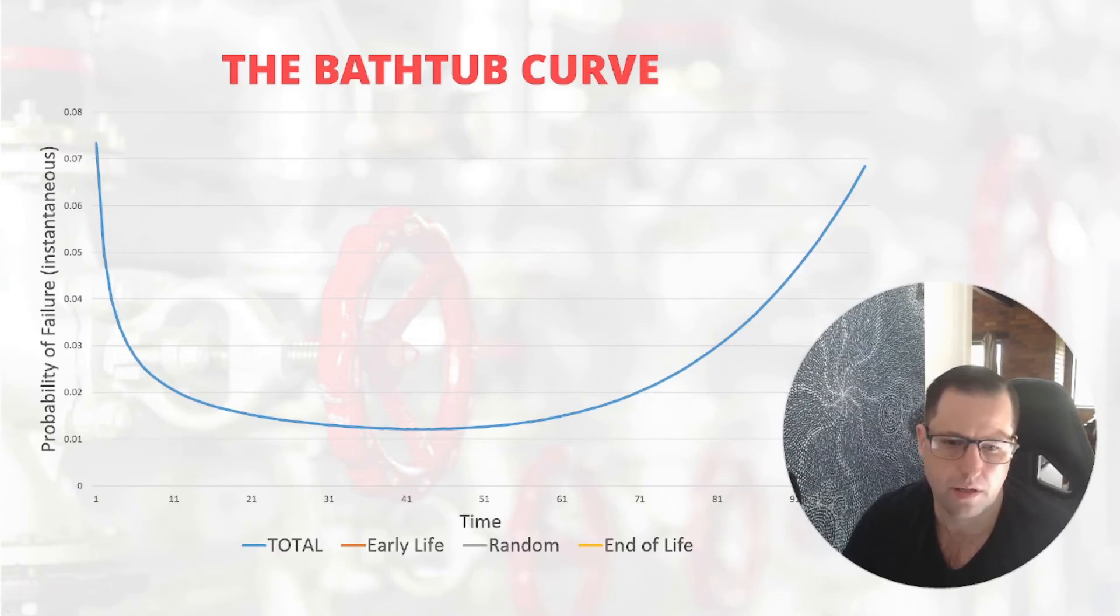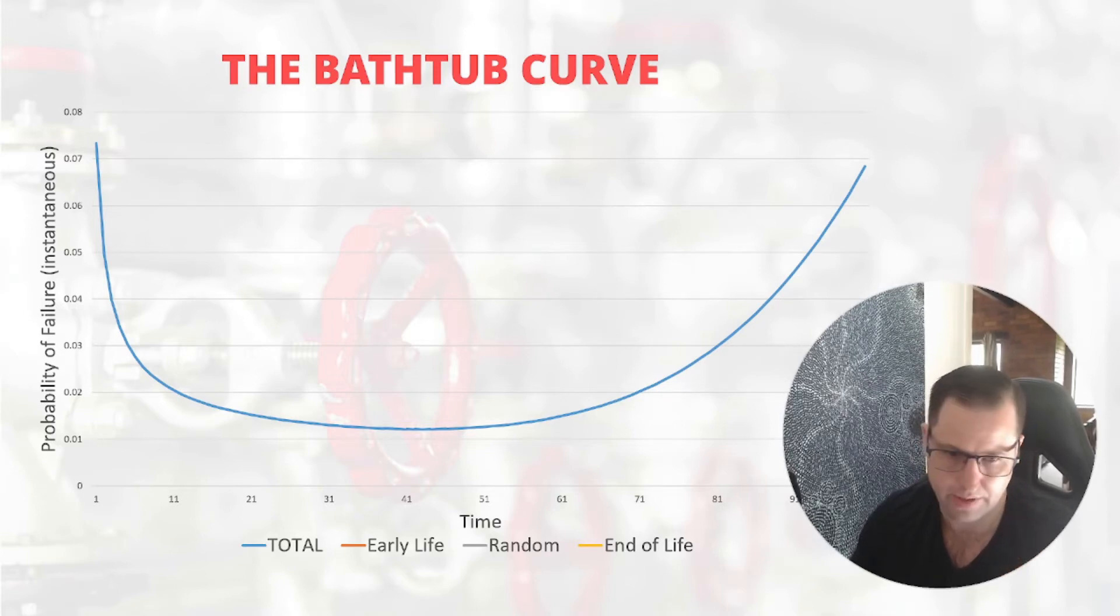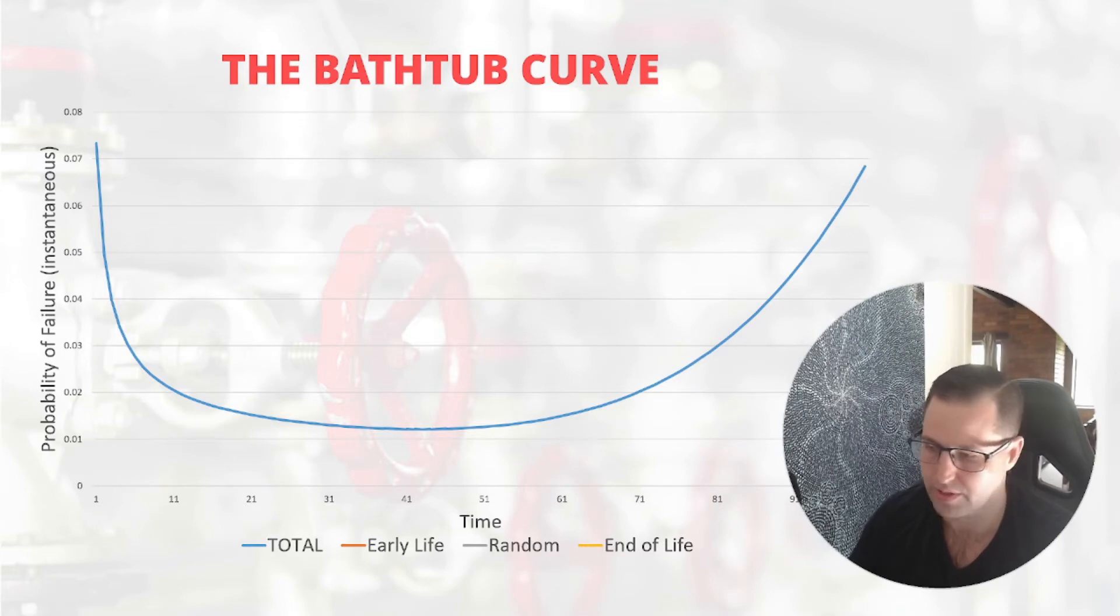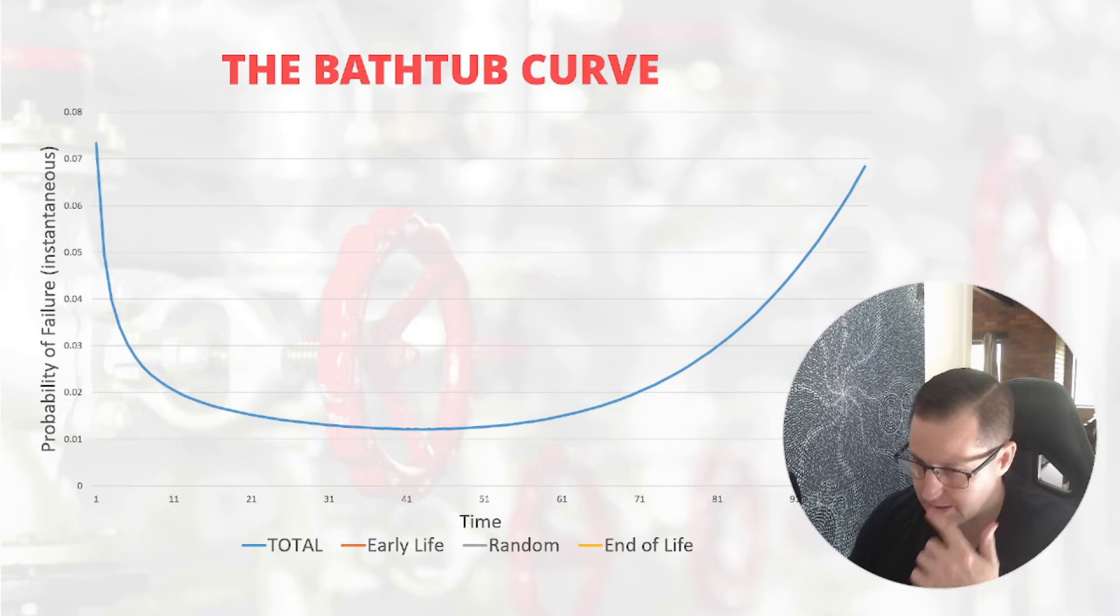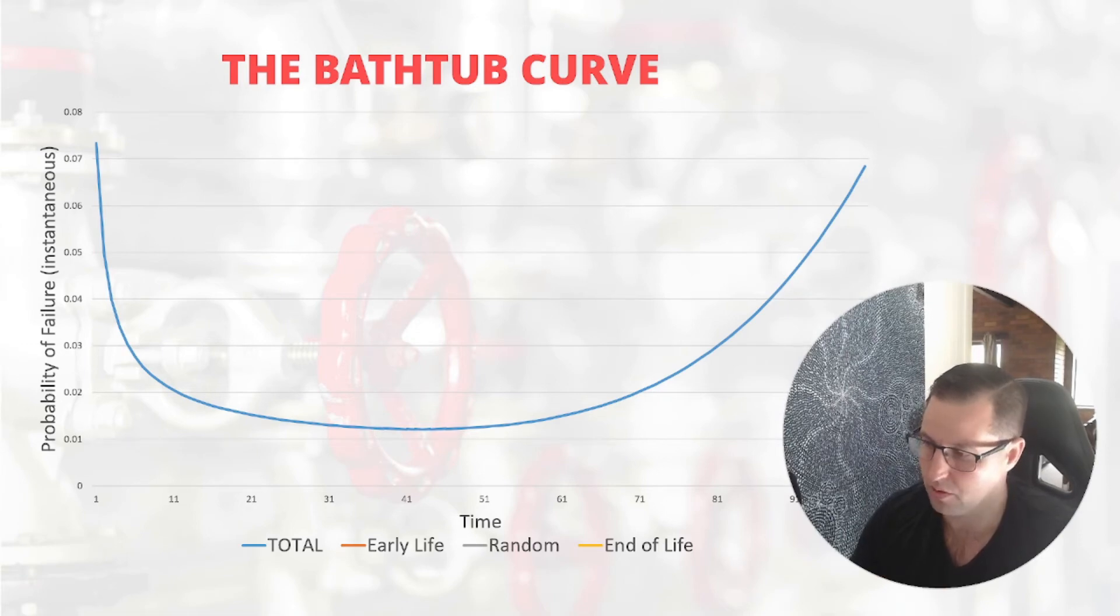The bathtub curve is an example of the practice of treating more than one failure type or failure mode using a single classification or an aggregated classification. What we see here is actually an aggregate of underlying likelihoods of failure up to a component or an asset level.